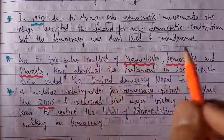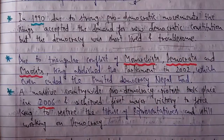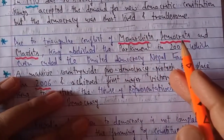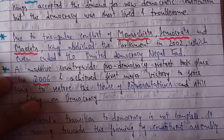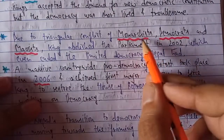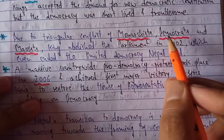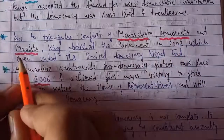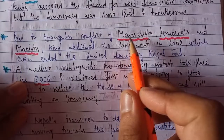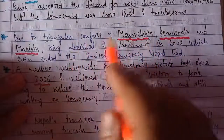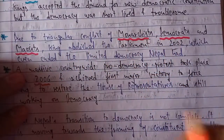This democracy was established for a very short time and was troublesome — there was instability in the democratic government after 1990. The reason was a triangular conflict between three groups: monarchists (the noble elite class supporting the king), democrats (those who supported and wanted to bring democracy to Nepal), and Maoists (who were totally against the elite and the monarch). There was always violence between the Maoists and the monarchist army, causing unrest in Nepal.